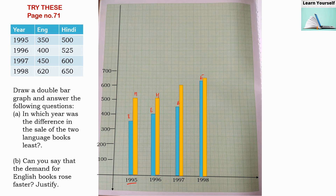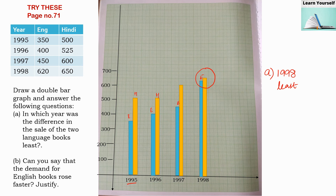Now let us answer the questions. First: in which year was the difference in the sale of two language books the least? Looking at the graph, the difference is least in the year 1998. Question B: can you say that the demand for English books rose faster? Yes, from the blue bars we can say that the demand for English books has risen faster since 1995.